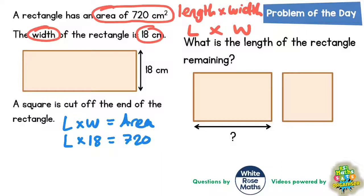We need to work in reverse to find out what the width is going to be. So if we're multiplying this mystery number by 18 to get 720, if we divide 720 by 18 we'll find out what the length is. That's what we need to do.